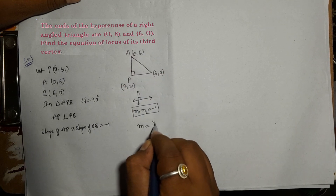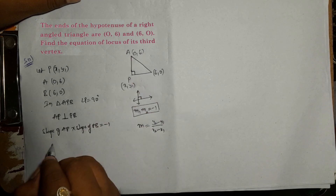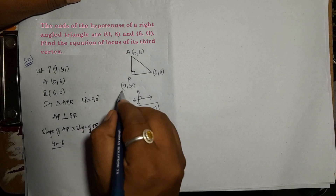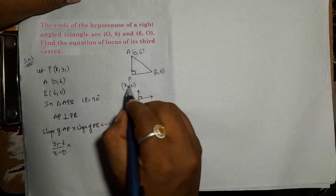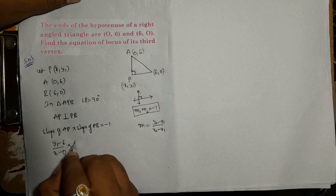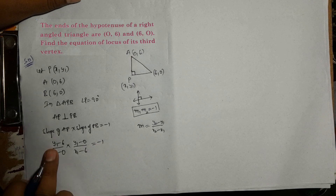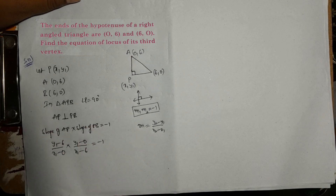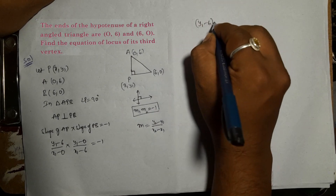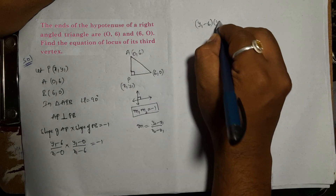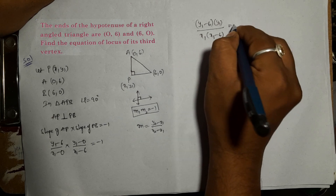The slope of AP equals (y1 - 6) / (x1 - 0), which is (y1 - 6) / x1. The slope of PB equals (0 - y1) / (6 - x1), which is y1 / (x1 - 6). So we have: [(y1 - 6) / x1] × [y1 / (x1 - 6)] = -1.